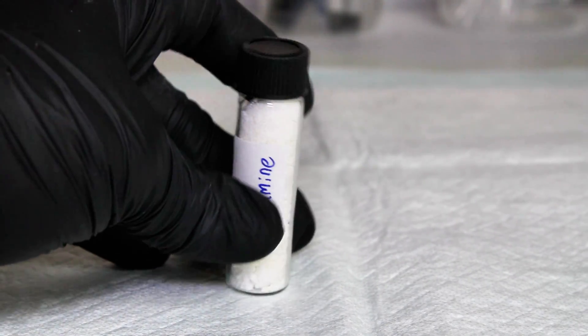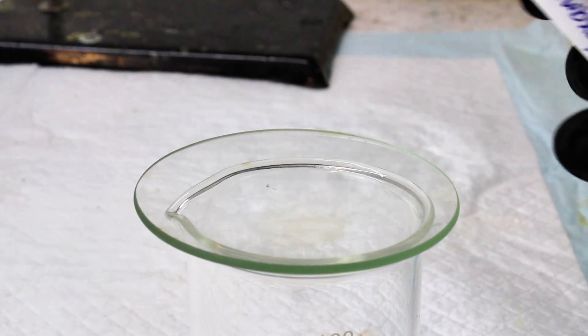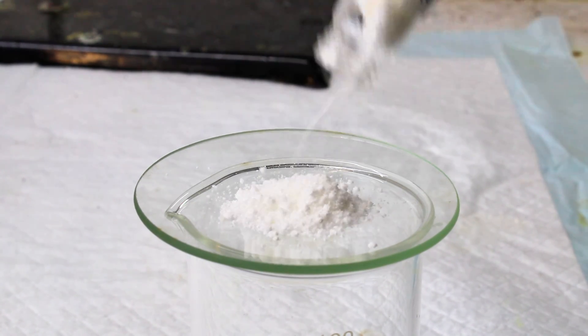Anyway, I go ahead and boil this stuff until hexamine crystals start to crash out, and then I load it into an oven and dry it out the rest of the way. This is my final product, and you can actually see that I burned it a little bit on accident.